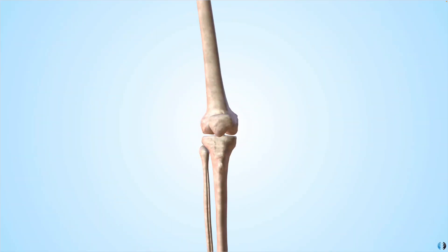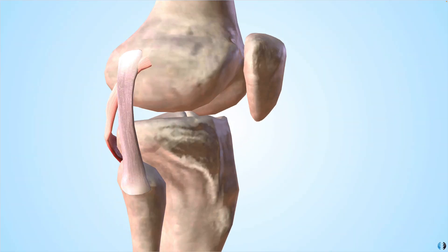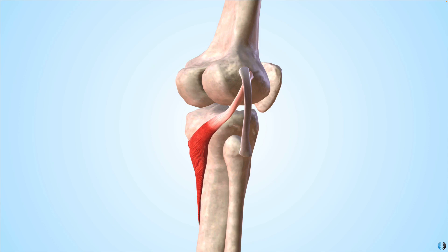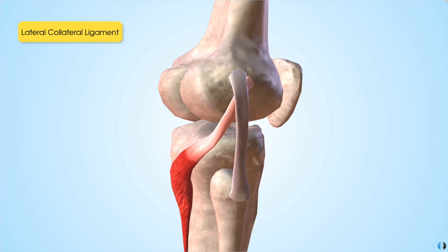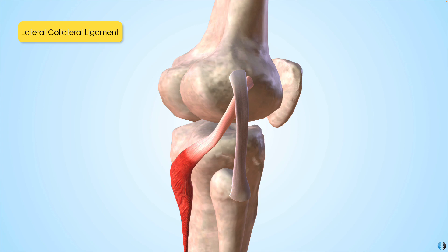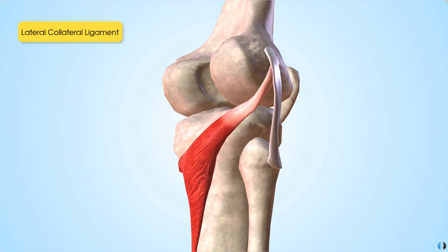So here's our 3D anatomy model. Let's dive into the posterolateral corner and look at the three main structures involved. First of all we have the lateral collateral ligament. This aims to prevent varus forces of the knee joint. The femoral attachment of the LCL is a small bony depression slightly proximal and posterior to the lateral epicondyle of the femur. The LCL then runs distally to insert into the fibular head.